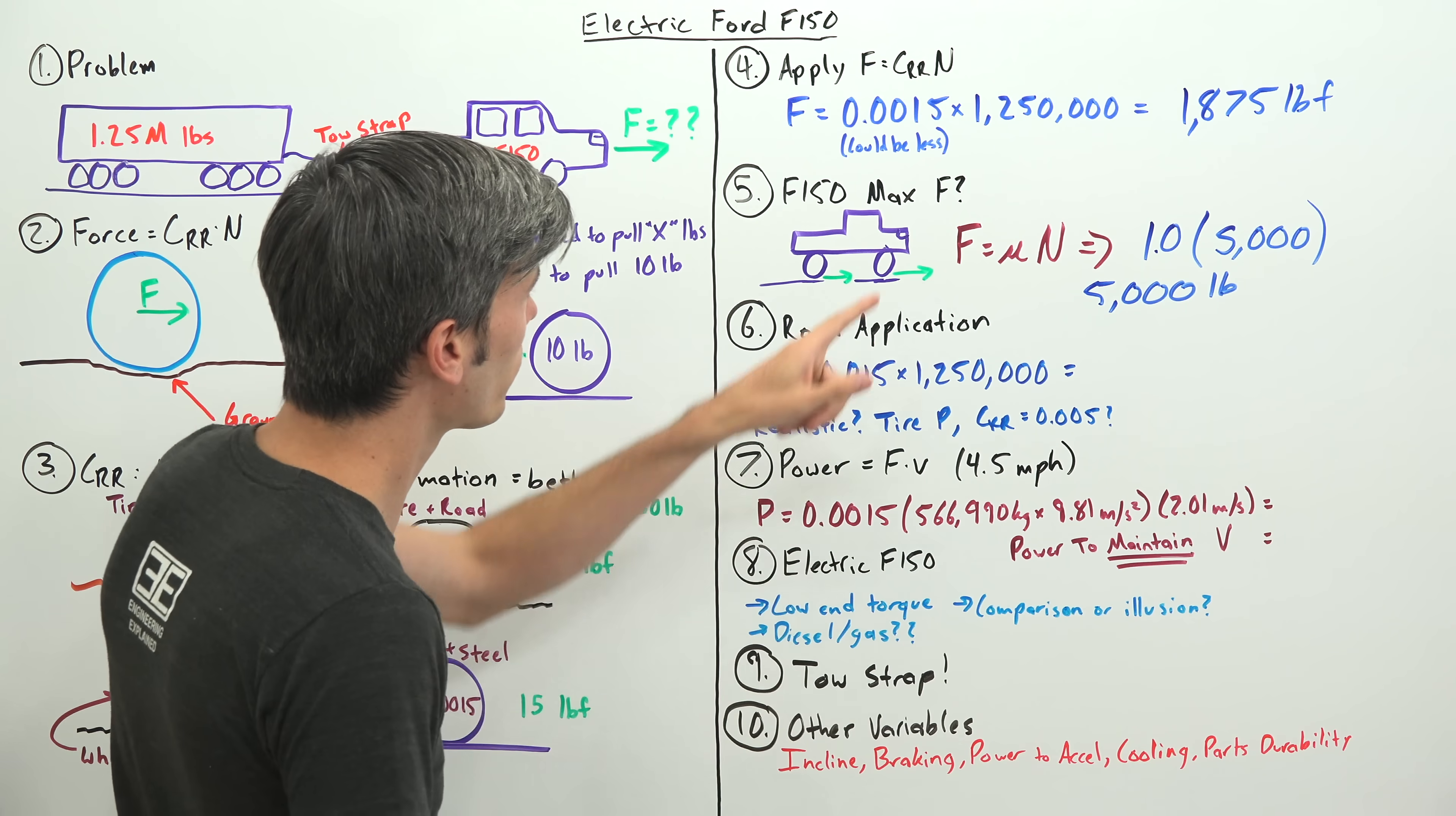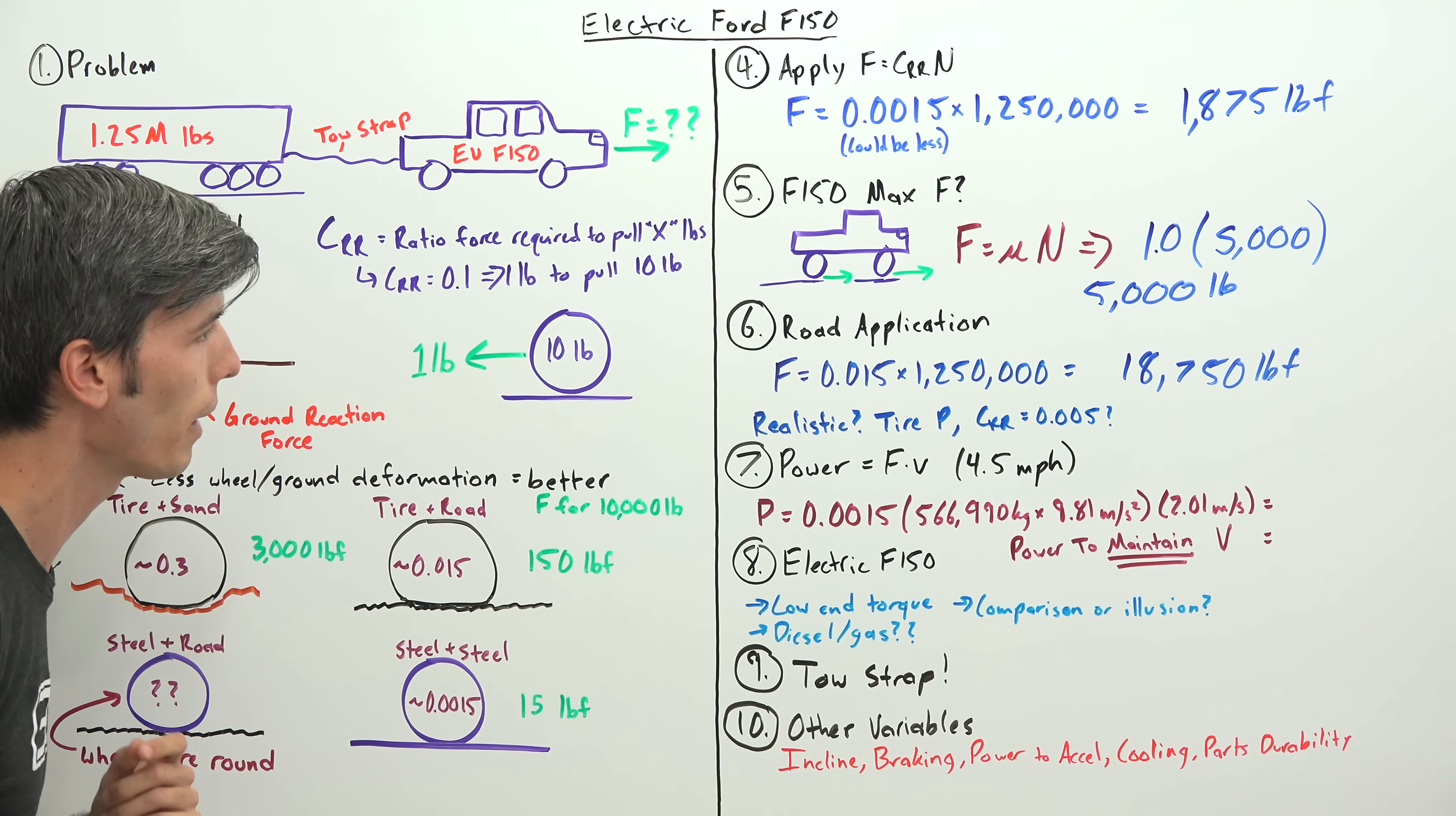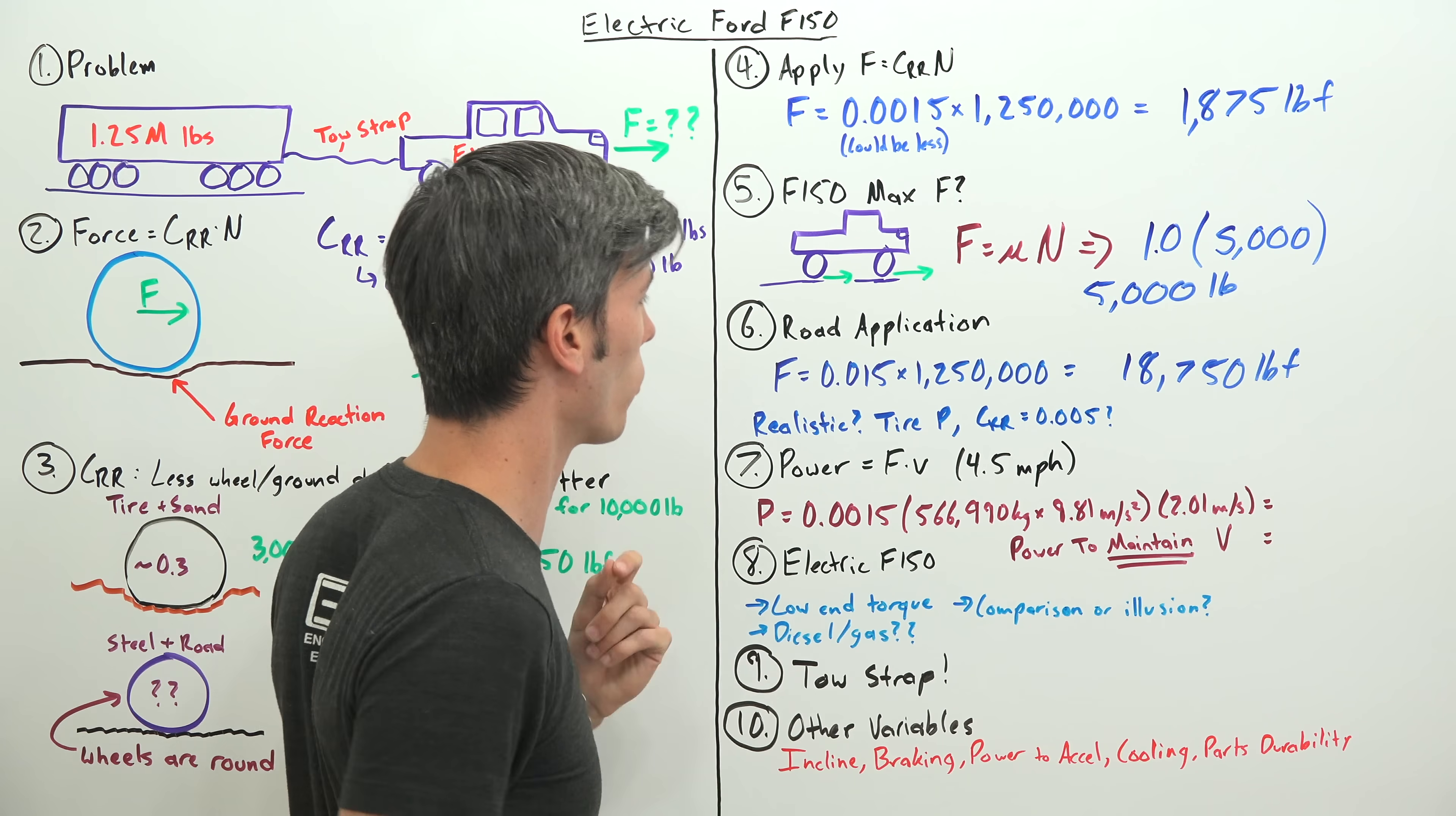And so now, instead of this 0.0015, our coefficient of rolling resistance is 0.015. So the force required to pull it is multiplied by 10. Now we need an 18,750 pound force to move this 1.25 million pounds on the road. And unfortunately, our maximum here is basically just going to be the weight of the truck itself. So if you load it up with a ton of stuff, you might be able to do it. But as is, this F-150 is very far away from this 18,750 number. So it would not even be able to budge that train if it was sitting on a road on road tires.